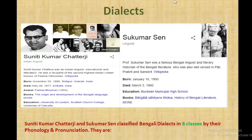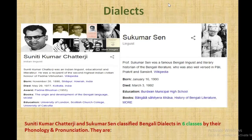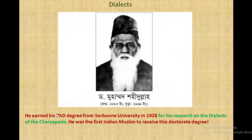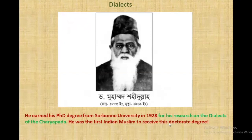The next part of the presentation is about what reflects culture. Dialect is what reflects our culture. Suniti Kumar Chatterjee and Shukumar Sen classified the Bangla dialects into six classes by their phonology and pronunciation. These are the Rarhi dialect, the Bangali dialect, the Varendra dialect, the Manbhumi dialect, and the Rajbangshi dialect. Dr. Muhammad Shahidullah earned his PhD degree from Sorbonne University in 1928 for his research on the dialects of the Charyapada — he was the first to receive this doctorate.